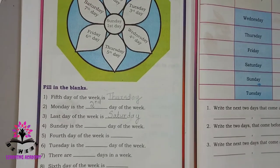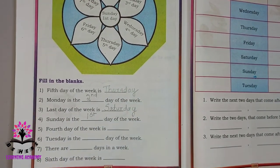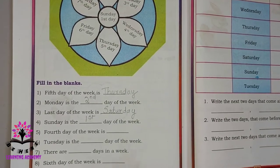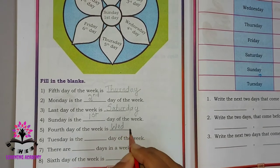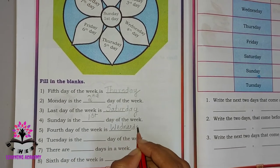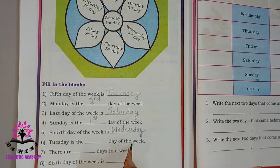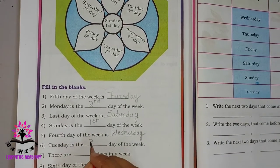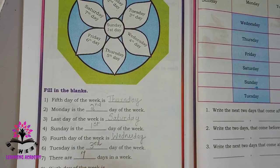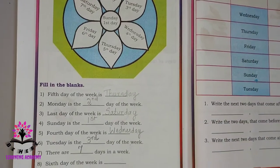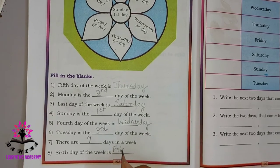Sunday is the first day of the week. The fourth day of the week is Wednesday. Tuesday is the third day of the week. There are seven days in a week. The sixth day of the week is Friday.